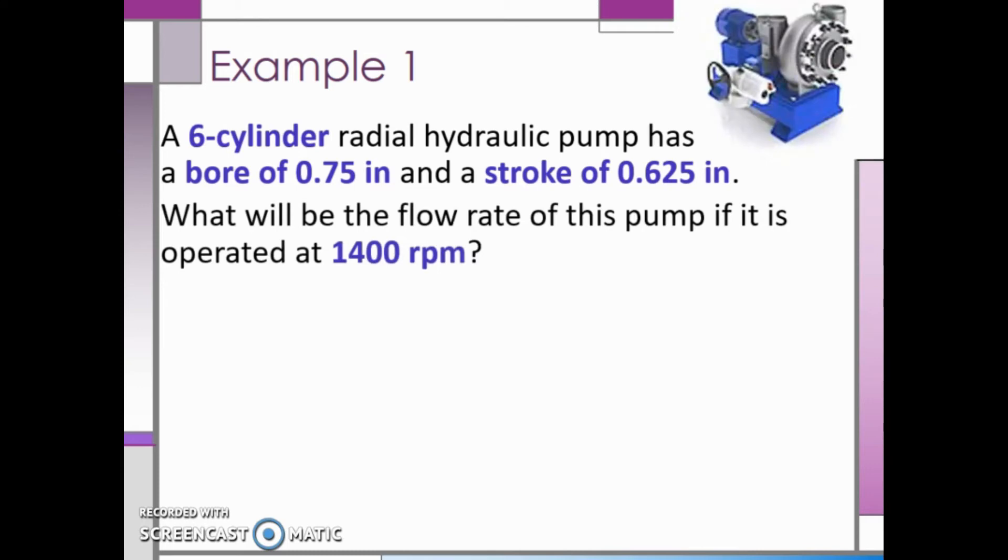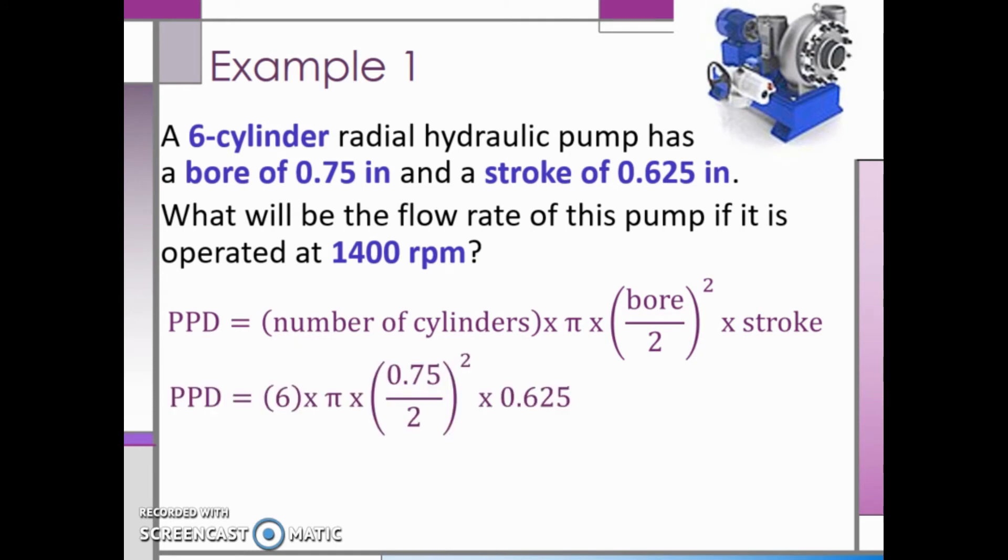First, before we can find the flow rate, we need to find the piston pump displacement, which I will abbreviate with PPD. Like we saw in the last slide, piston pump displacement is equal to the number of cylinders multiplied by pi multiplied by the bore divided by 2 squared multiplied by the stroke. We have six cylinders and we can substitute 0.75 in for the bore and 0.625 in for the stroke.